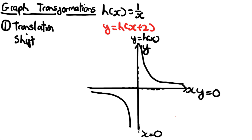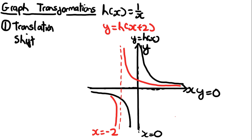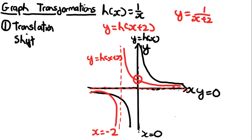Now let's do y = h(x + 2), with the 2 inside the brackets. This time the vertical asymptote is affected and shifts left by 2, moving from x = 0 to x = −2. The horizontal asymptote y = 0 stays the same. The new equation is y = 1/(x + 2). If we make x = 0 to find the y-intercept: y = 1/2. So the y-intercept is 1/2.